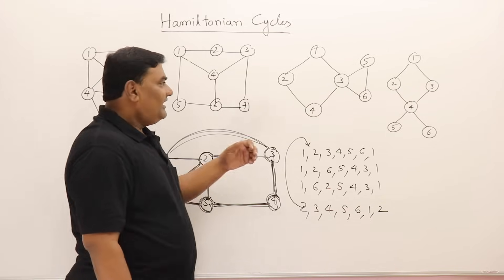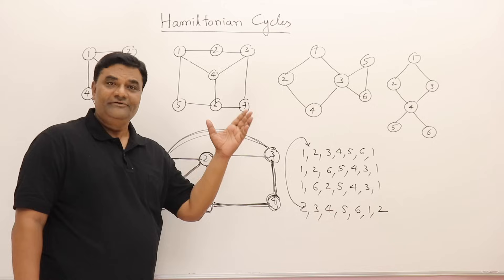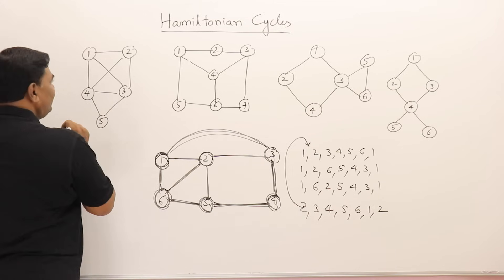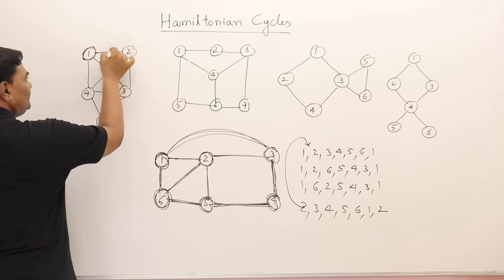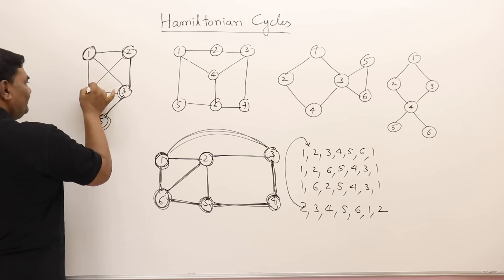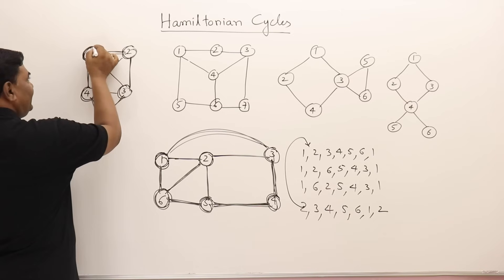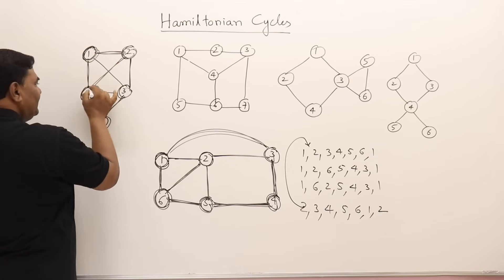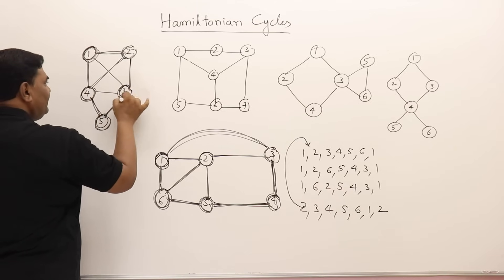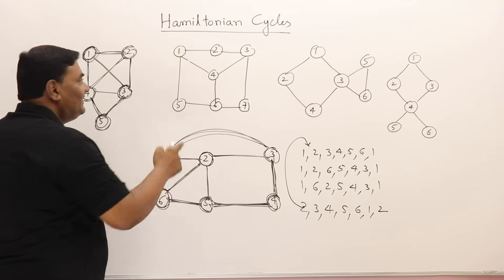Now let us look at a few more examples. From this graph we can find: one cycle is 1→2→3→5→4→1. Another cycle: 1→2→4→5→3→1. So there are more than one cycles possible in this graph as well.